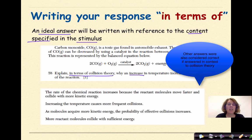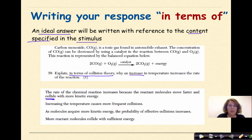Let's look at the responses that were accepted. The rate of a chemical reaction increases because the reactant molecules move faster and collide with more kinetic energy. Increasing the temperature causes more frequent collisions. As molecules acquire more kinetic energy, the probability of effective collisions increases and more reactant molecules collide with sufficient energy. The key thing here that I'm trying to point out is that it needs to be in terms of collisions. Every single one of these responses involves either the word collisions or collides. So make sure that you stay focused on that when you're writing your answers.